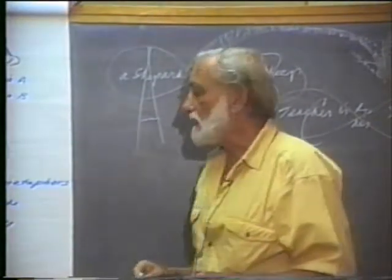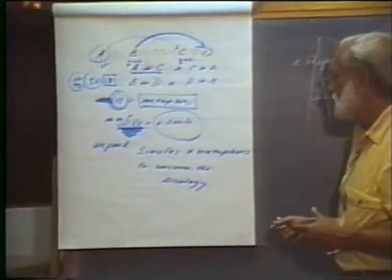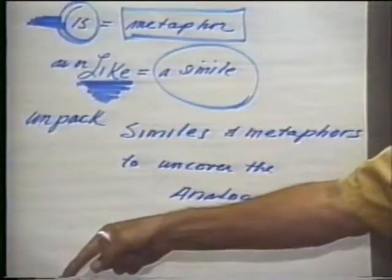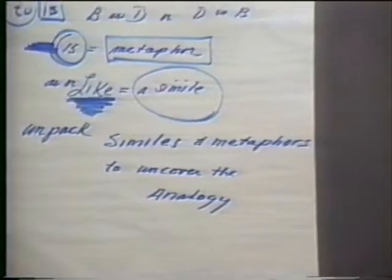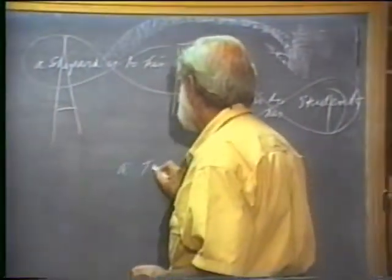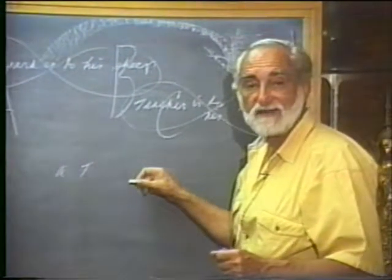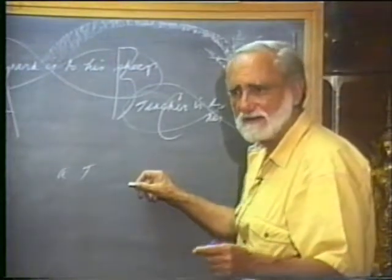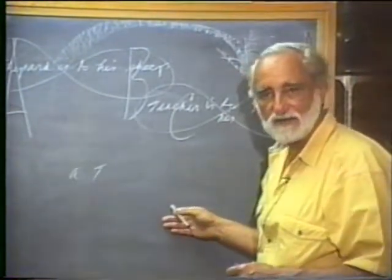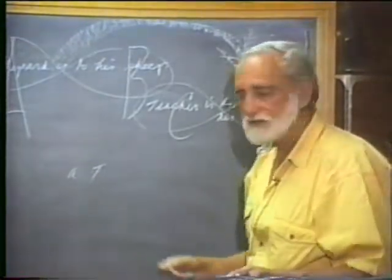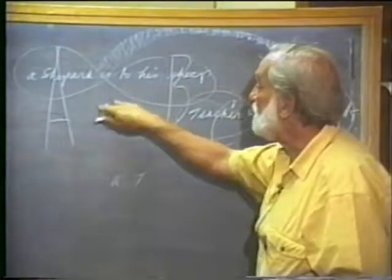Any time you have a simile or a metaphor, you can unpack it, take it apart, and explore it. You can unpack it going backwards and recreate the analogy from which it was taken. A tyrant is a shepherd — it's a very poor analogy, not ideal, but we can say in some respects there must be some relation going on between the two which I can transfer to my second set of terms. When I do that, I am unpacking it, bringing it back to the original analogy. There are four possible similes and four possible metaphors of any analogy.